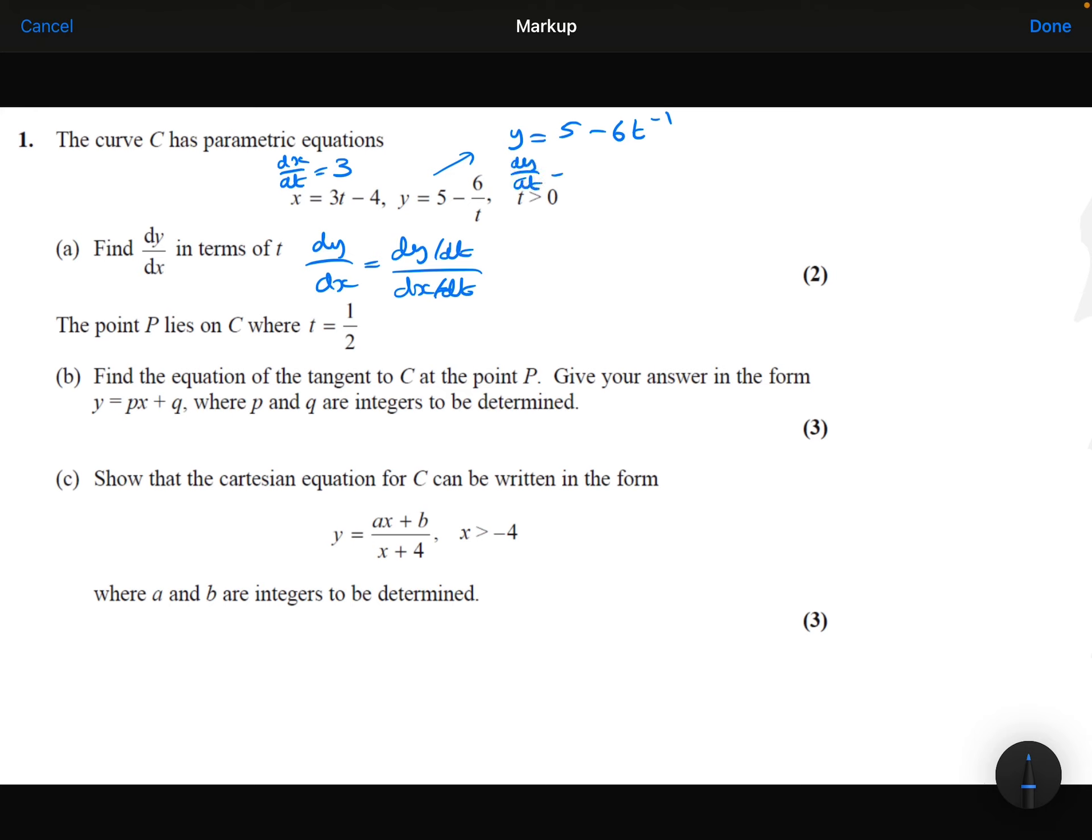Differentiating the 5 will be 0, and then differentiating the minus 6t to the minus 1, multiplying by minus 1 will give me a plus 6, then taking 1 away from the power will be t to the minus 2.